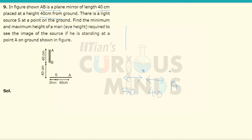The source is kept at this point. The light ray will pass like this and after reflection, it will arrive at point A. This is the minimum height of the man that is required in order to see the image. Let us calculate this height.